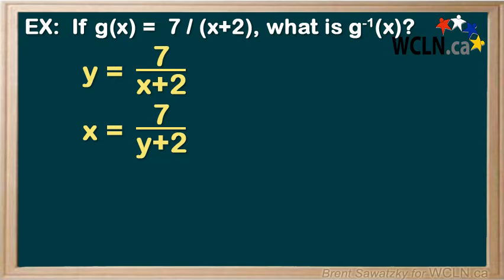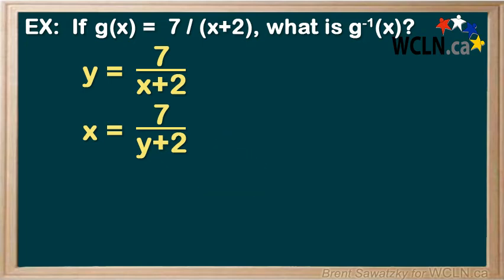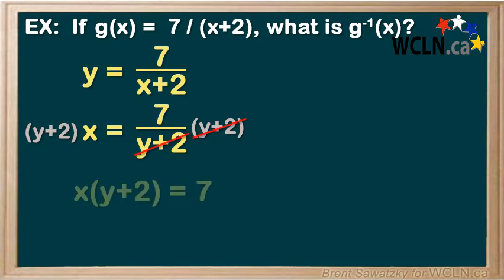So let's go further and isolate the variable y. We want to get this y plus 2 off the bottom here, and the opposite of dividing by y plus 2 is to multiply by y plus 2. And they cancel, and we're left without a fraction.